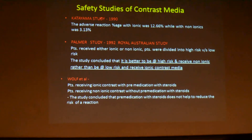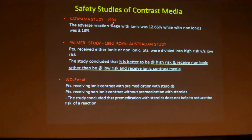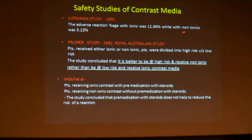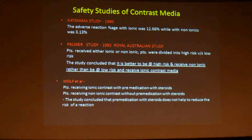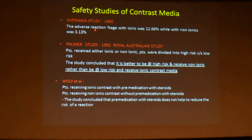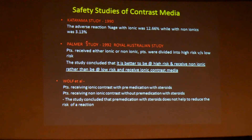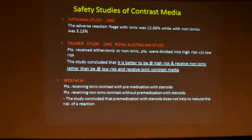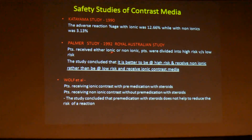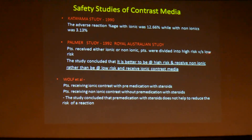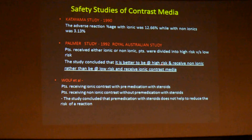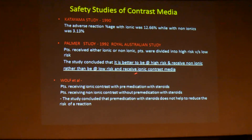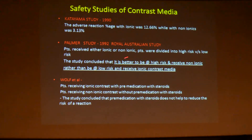There are a few landmark studies regarding safety standards of contrast media. The Katayama study of 1990 shows that the percentage of adverse reactions with ionic contrast is 12.66%, while with non-ionics it is 3.10% — that is the reason we always use non-ionics. The Palmer Royal Australian study of 1992 classified patients receiving either ionic or non-ionic contrast into high-risk and low-risk groups. Its conclusion is that it is better to be a high-risk patient receiving non-ionic contrast than a low-risk patient receiving ionic contrast.